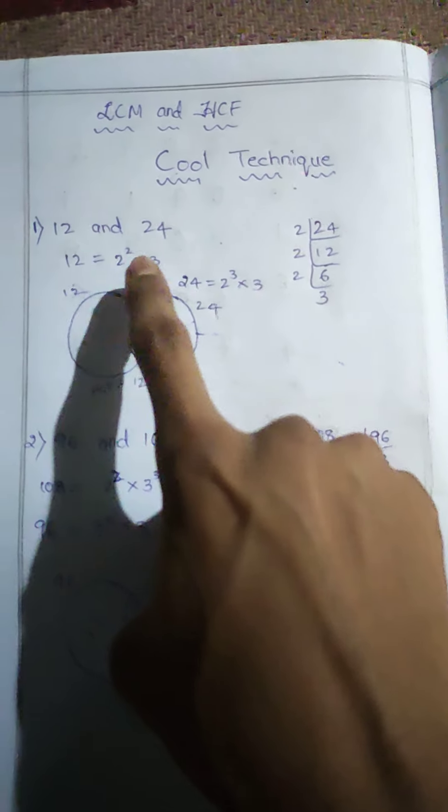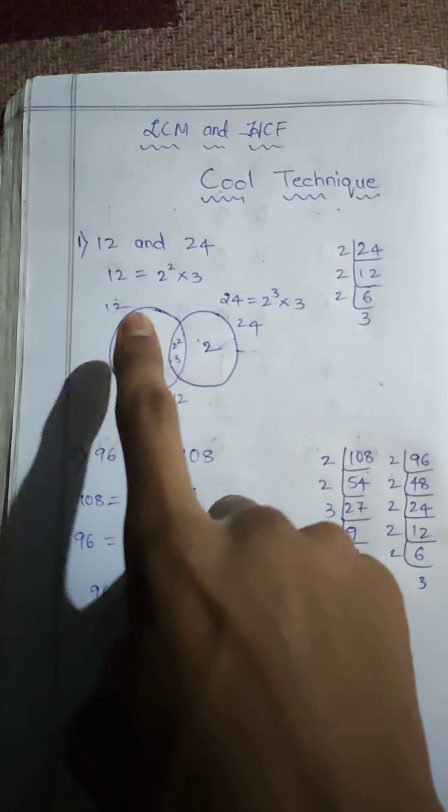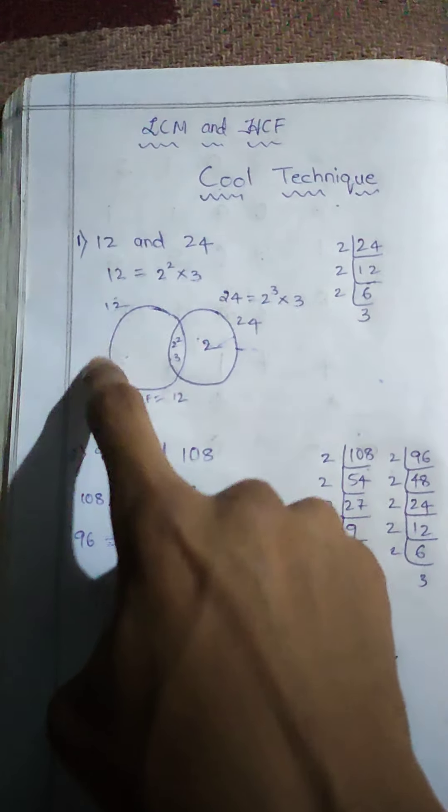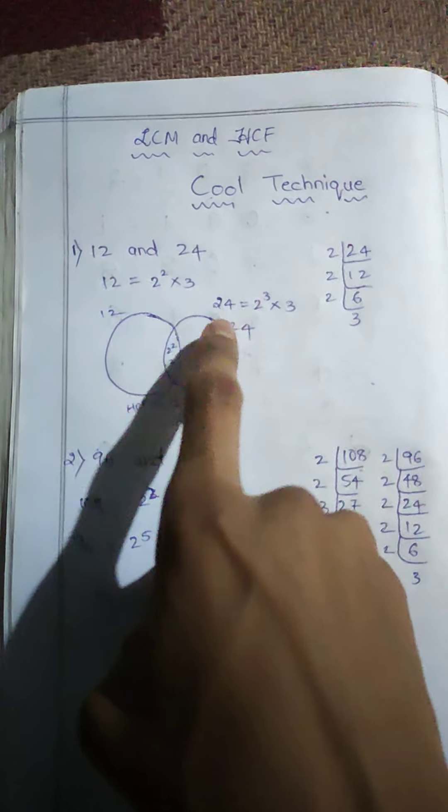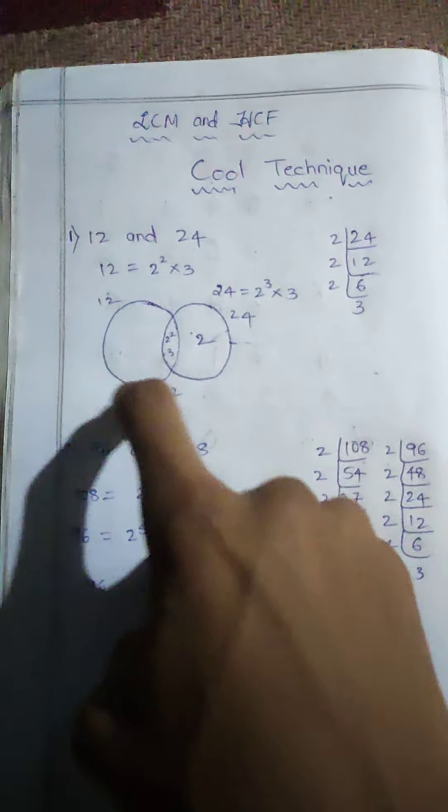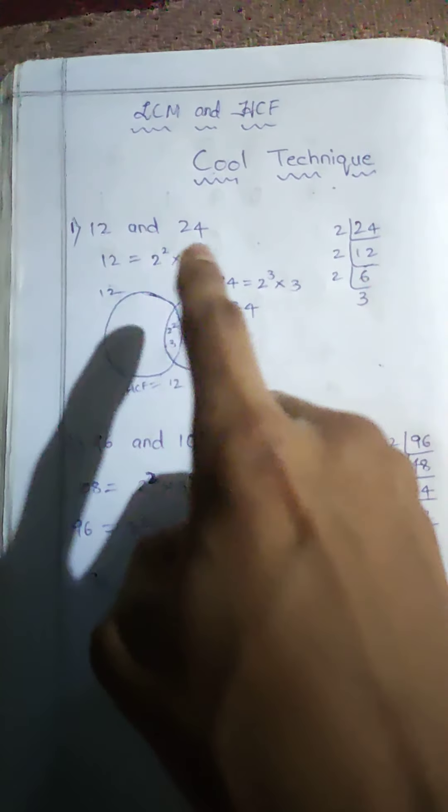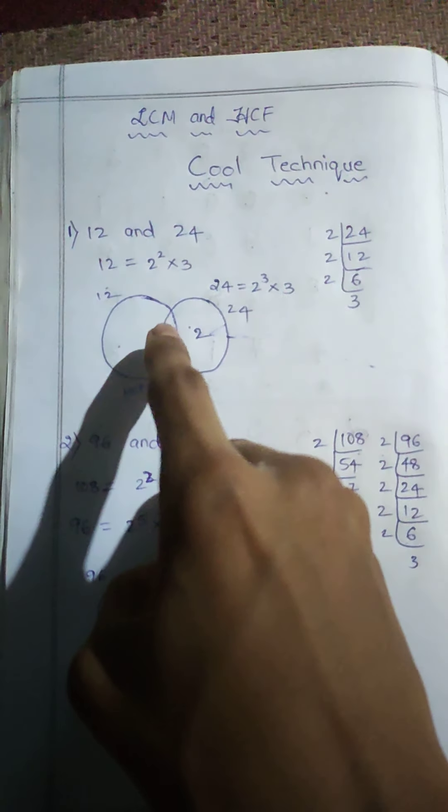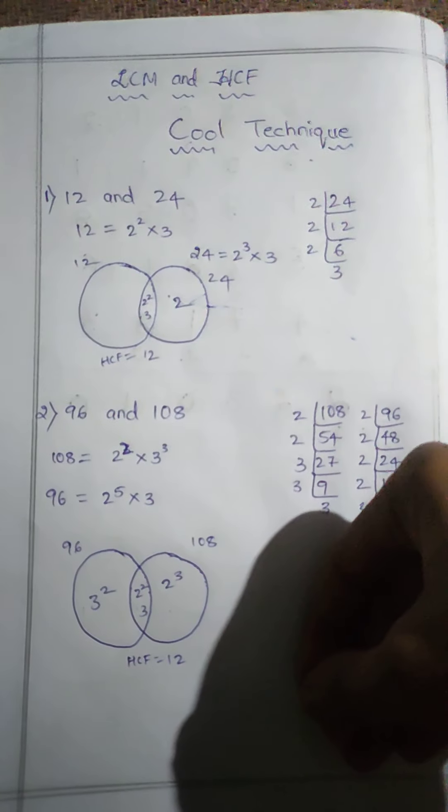Draw circles for both numbers. First take the 12 circle, and take the common circles. Draw the two circles and write the common numbers of the two numbers in the middle.